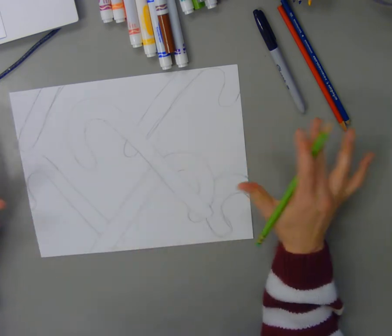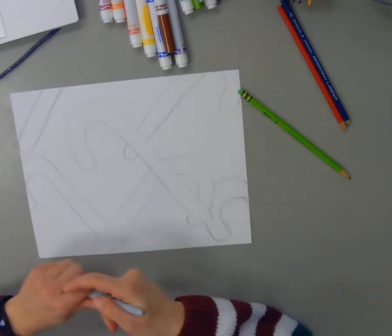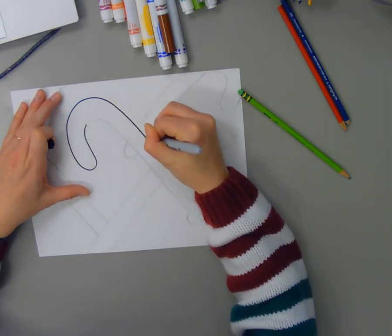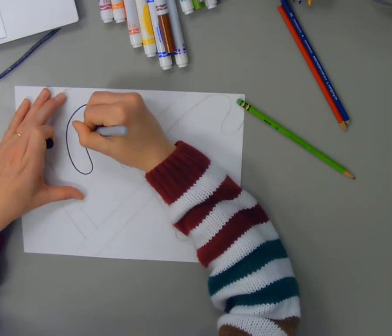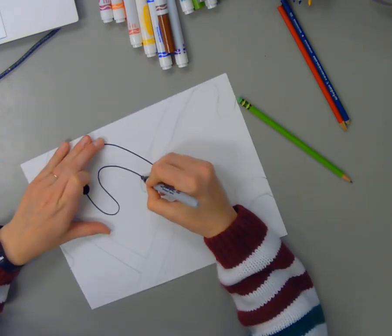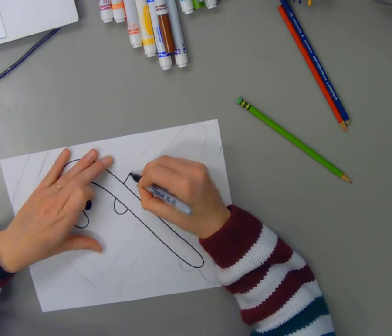Now, once I've kind of filled my space, I'm going to go through and trace. Now, I'm using a Sharpie, but you don't have to, you can use a regular black marker, you can use a pen, you could use a black crayon or a black pencil.